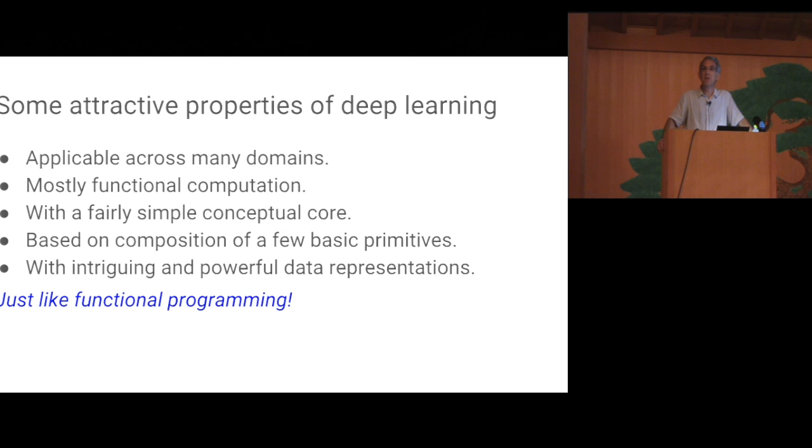We can already see and highlight some interesting properties of deep learning, some attractive properties. One is that it's clearly applicable across many domains, relying on what seems like a very simple, very fundamental conceptual core. This conceptual core is based on functional applications, just like functional programming, and on composition of very basic functions, just like functional programming. And whenever one composes two functions, f and g, there is some intermediate representation for the data, that is the output of f and the input to g. And in deep learning, those intermediate representations are quite intriguing and worthy of study. Just like in functional programming too, occasionally there is a need for state and other things that don't fit quite so neatly into the basic paradigm, and that can be interesting too, as we will see later in the talk.